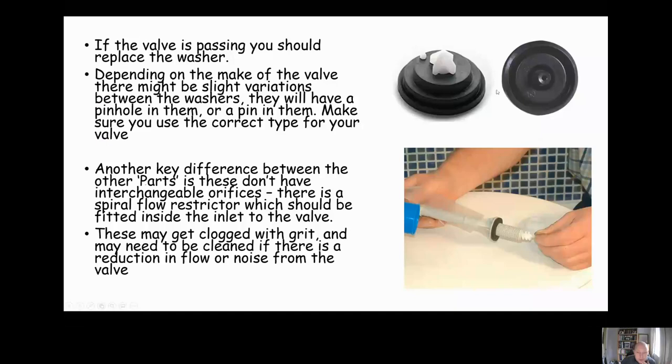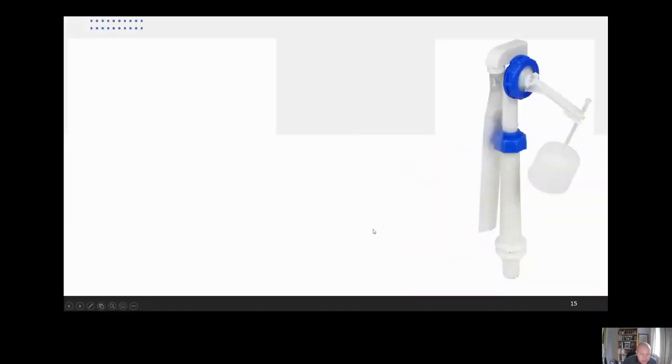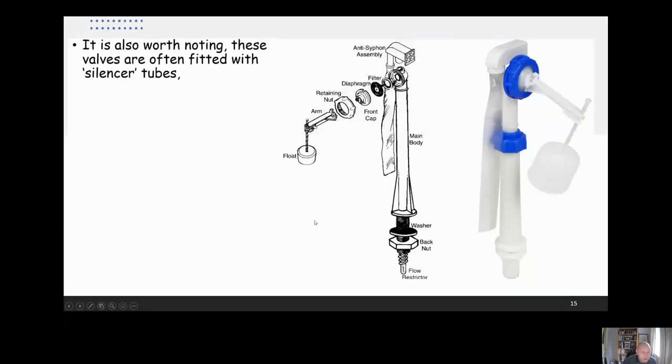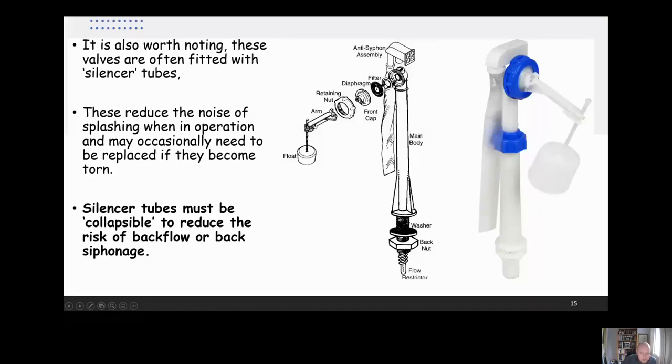You can replace the washer inside these, and you can also replace these restrictive tubes. There's different sized restrictor tubes depending on whether it's on mains pressure or lower pressure from a system. It can be clogged with grit as well, so you could clear that out. Often these are fitted with silencer tubes. They have to be collapsible silencer tubes. The good thing about these is they reduce the noise in the system.